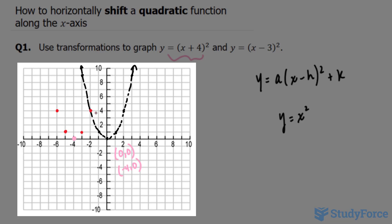This point was at -3, and now it becomes -7. And this point was at positive 3, and now it becomes -1. And there you have it—that is a horizontal shift to the left.